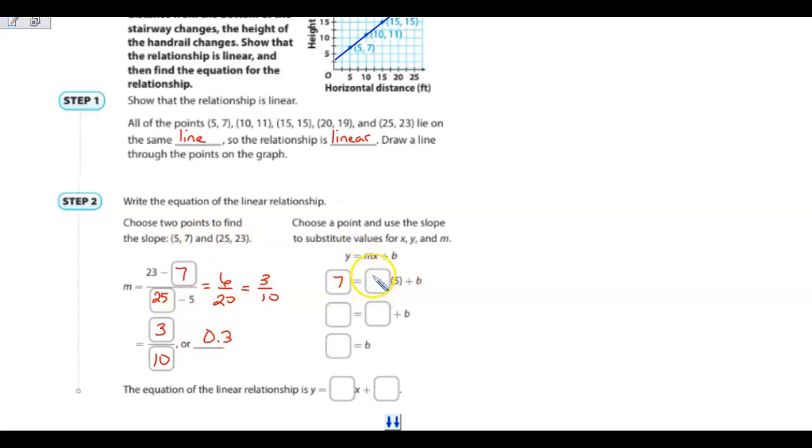We have our slope, which is 3 tenths, and if I take 3 tenths times 5, I get 1 and 5 tenths, and then when I subtract 1 and 5 tenths from each side, I get 5 and 5 tenths. So that's going to be my y-intercept.